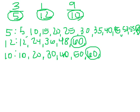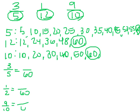Since sixty is the common denominator, I need to change all of my fractions into sixtieths — three-fifths into sixtieths, one-twelfth into sixtieths, and nine-tenths into sixtieths. How many times did I count by five to get sixty? I counted twelve times, which means I also do my numerator times twelve. Three times twelve is thirty-six, so I'll have thirty-six sixtieths. Three-fifths is equal to thirty-six sixtieths.